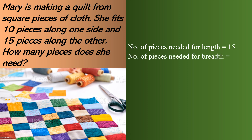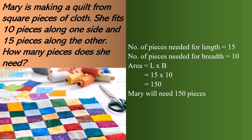So we can say number of pieces needed for length equals 15, and number of pieces needed for breadth equals 10. The formula to find area of a rectangle is area equals length into breadth. Putting the values: 15 multiplied by 10 equals 150 pieces. So Mary will need 150 pieces to make that quilt.